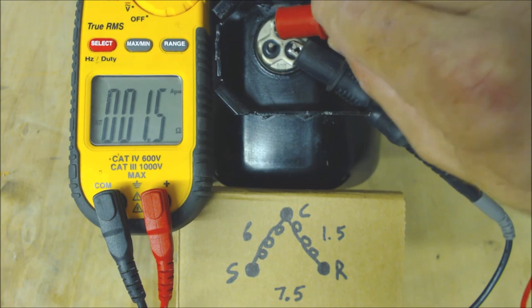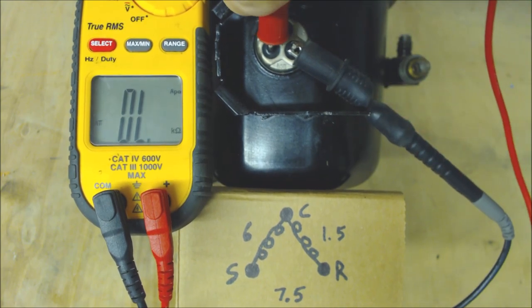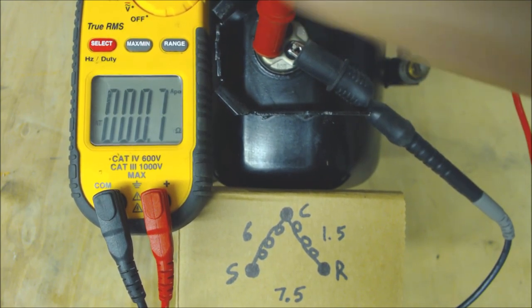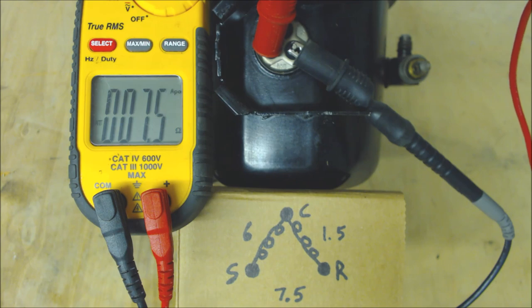Now we're going to read our resistance value right over here. So that's our bottom two terminals and we're reading 7.5.